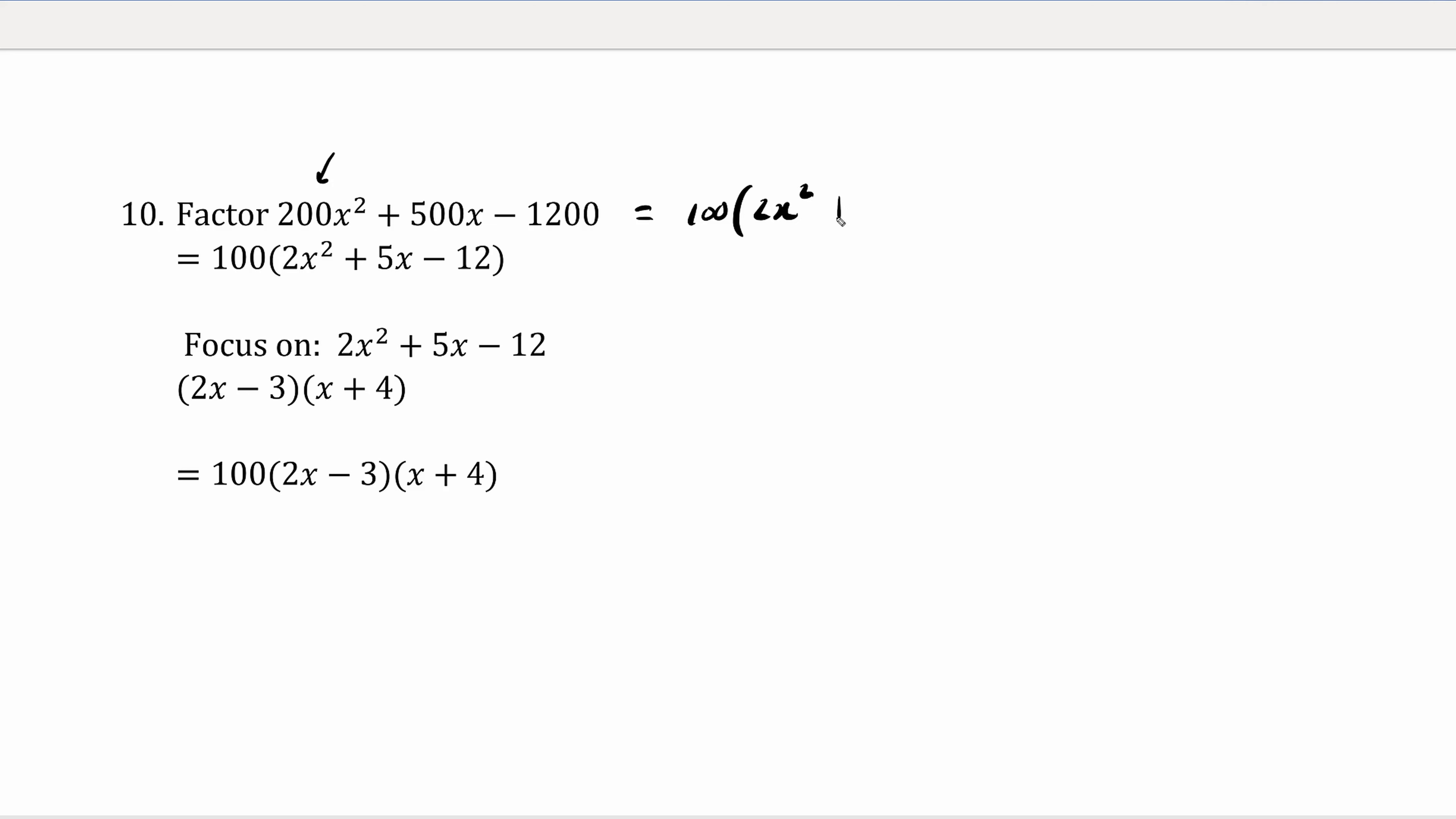We have 2x squared plus 5x minus 12. When you multiply these out, indeed we have the original question.